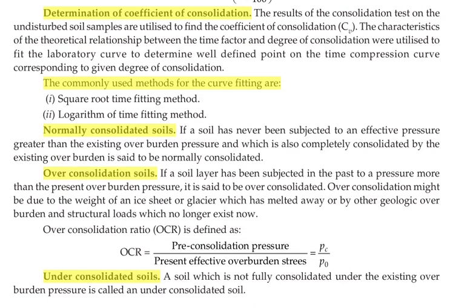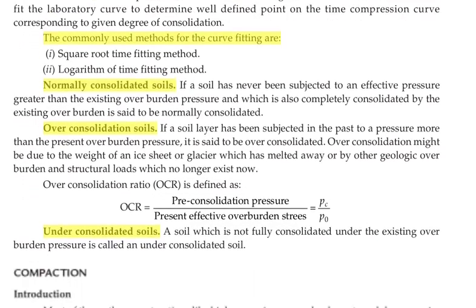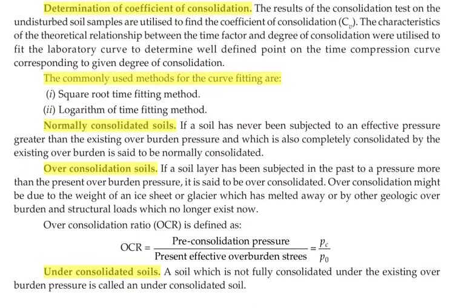Over consolidated soil is a soil layer that has been subjected in the past to a pressure more than the present overburden pressure. Over consolidation may be due to the weight of an ice sheet or glacier which has melted away, or by geological overburden and structural loads which no longer exist. The over consolidation ratio OCR is defined as the ratio of pre-consolidation pressure to present effective overburden pressure: OCR = PC / P0.